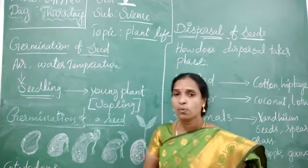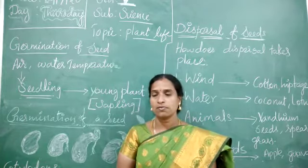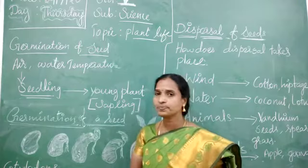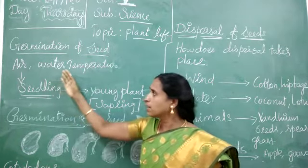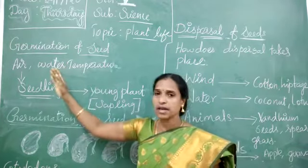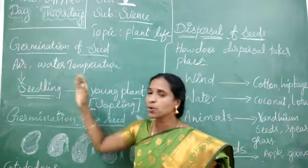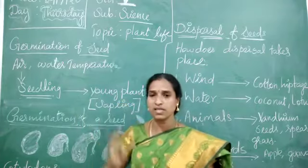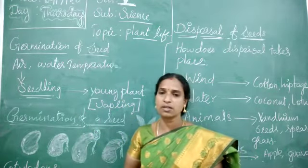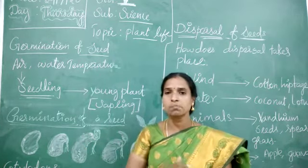What are the favorable conditions needed for germination of a seed? Air, water, and temperature. Out of these — air, water, and temperature — if any one of them is missing, what happens? The seed does not germinate. That means the seed will not grow into a new plant.